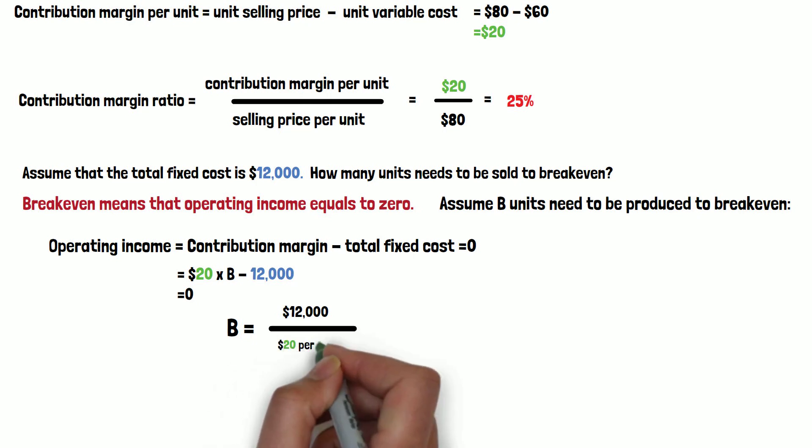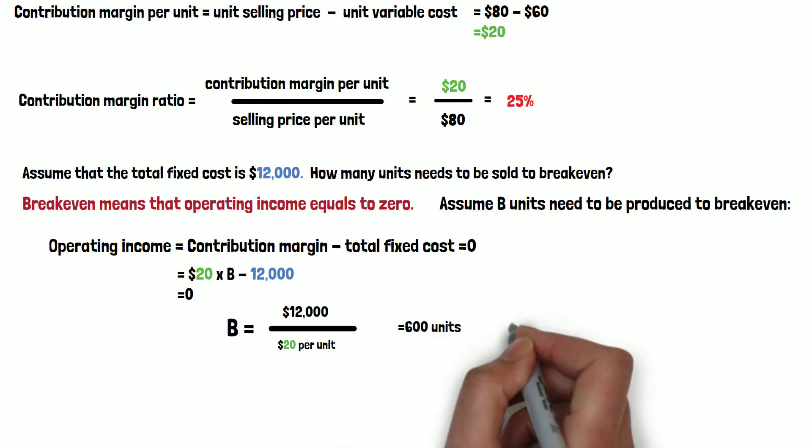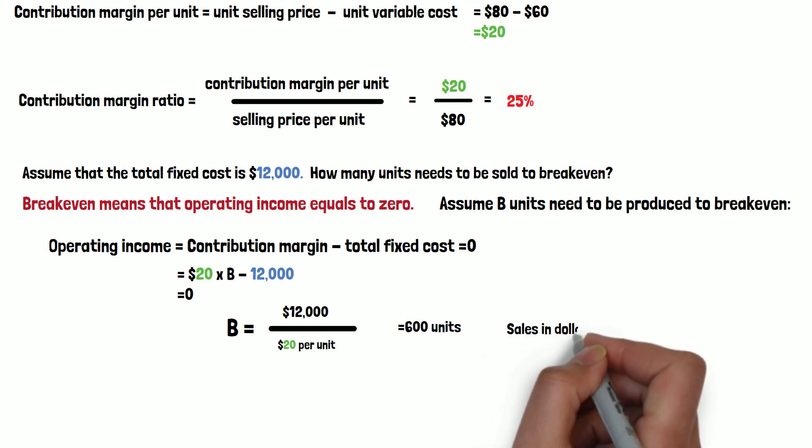In order to solve for B, we got $12,000 divided by $20 per unit. We figured out this is 600 units. So that's the units of sales to break-even.